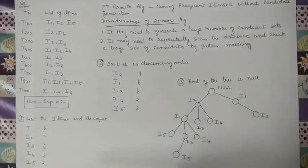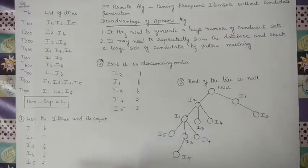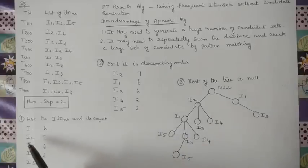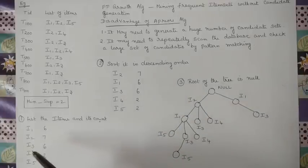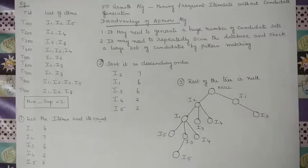Once the counts are listed for all items, the second step is to sort these items in descending order — from large to small. After sorting, I2 comes first, then I1, I3, I4, and I5. So the second step is complete.